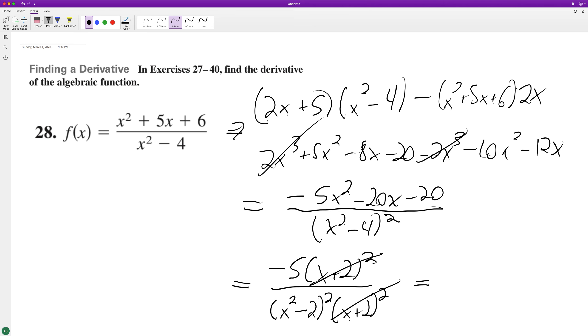So we're left with negative 5 over x squared minus 2 squared. And that's it.